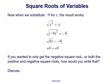So now when we substitute in negative 9 for x, we use the rule that the square root of x squared equals the absolute value of x, not just x. So the square root of negative 9 squared equals the absolute value of negative 9; we then have the square root of 81 equals the absolute value of negative 9, which gives us 9 equals 9 — positive 9 and positive 9.